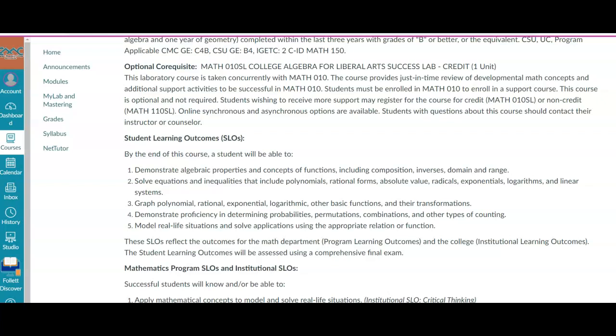I'm talking about the optional co-requisite. You can take it for one unit credit or you can take it as a non-credit. If you're taking it as non-credit, you use the Math 110 SL. If you want the credit, then it's Math 10 SL. They're the same time, same instructor. There are different options, both synchronous and asynchronous. I teach the synchronous one; another instructor does the asynchronous one.